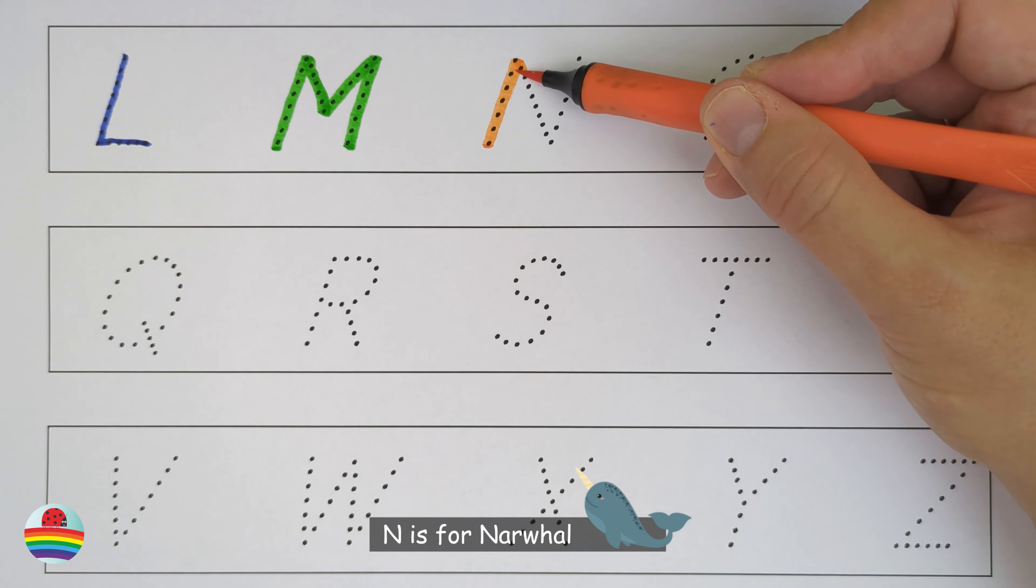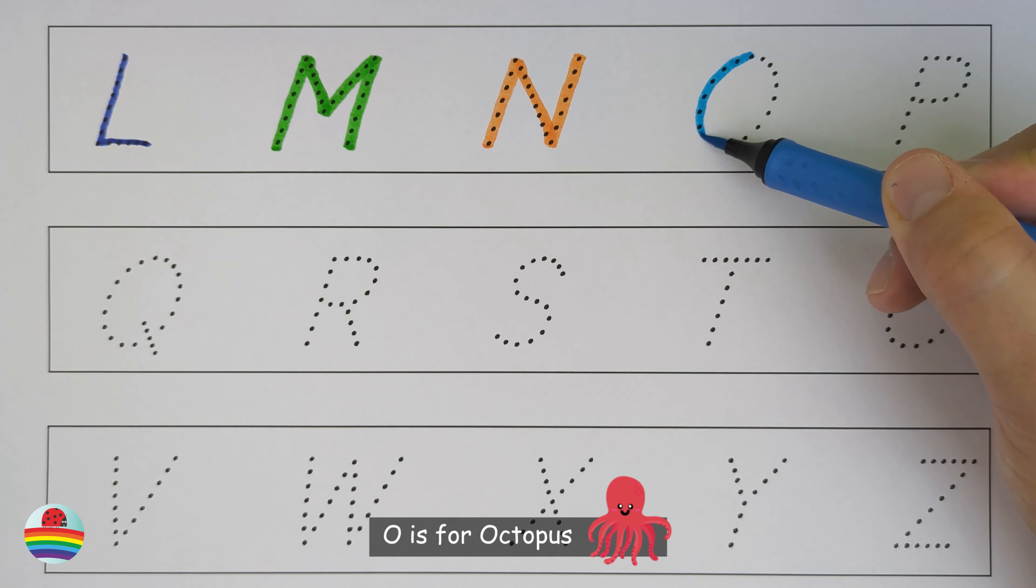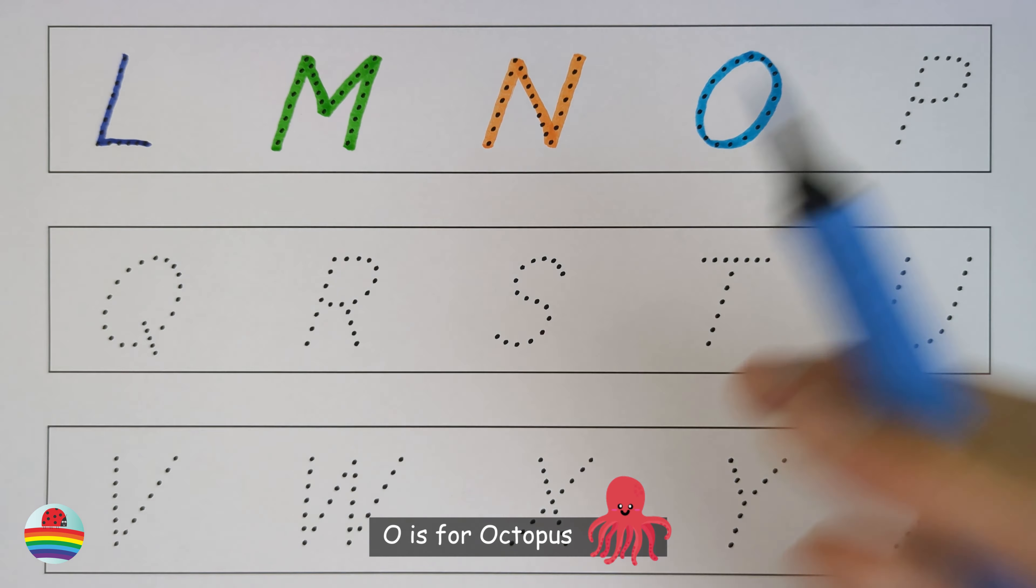N. N is for narwhal. N. O. O is for octopus. O.